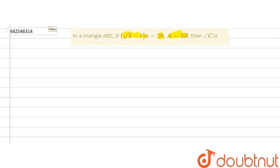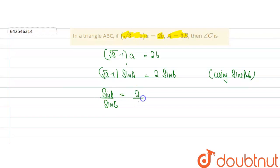So we start this problem by writing the equation which is given to us. Root 3 minus 1 times A is equal to 2B, which will give us root 3 minus 1 times sin A is equal to 2 sin B, using sin rule. This gives us sin A by sin B equal to 2 by root 3 minus 1, which is also equal to A by B.